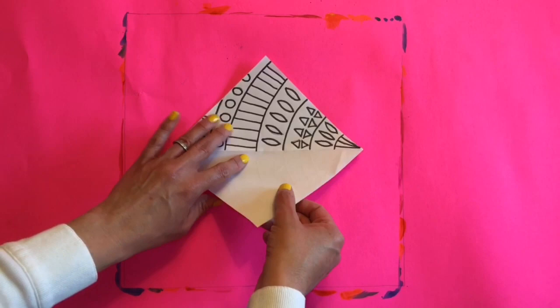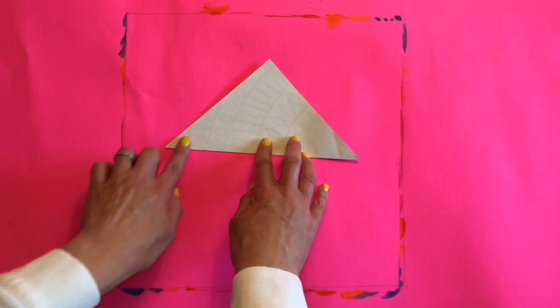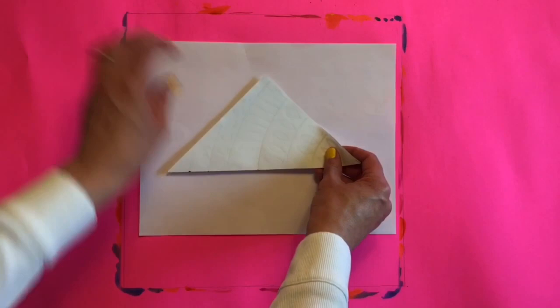Now take the bottom half and flip it over. Make sure your paper's edges are lined up when folding. Now we're going to trace over the lines that you can see coming through the paper. Since we used a thin paper, you can see the design underneath. Trace over all the lines and shapes with pencil.